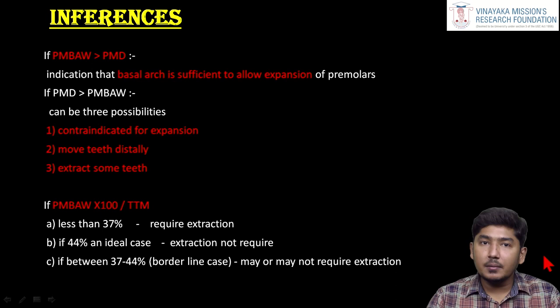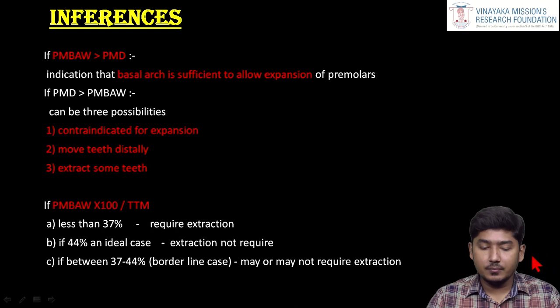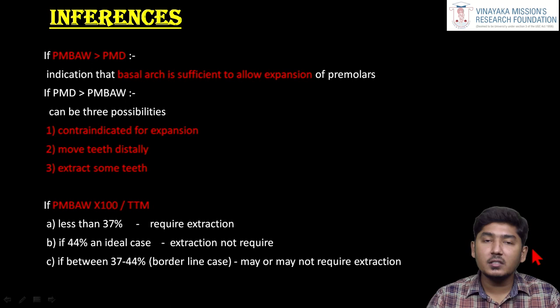The inference is: if the premolar basal arch width is more than the premolar diameter, the basal arch is sufficient for expansion. If not, expansion is contraindicated and the approach would be to move teeth distally or extract some teeth to gain space. Based on the percentage, the mean value of 37 to 44 percent is the borderline case, in which the clinician can go for either expansion or extraction. If the value is less than 37 percent, extraction is indicated. The premolar basal arch width and premolar diameter assess whether expansion is possible, and the percentage determines whether extraction is required.